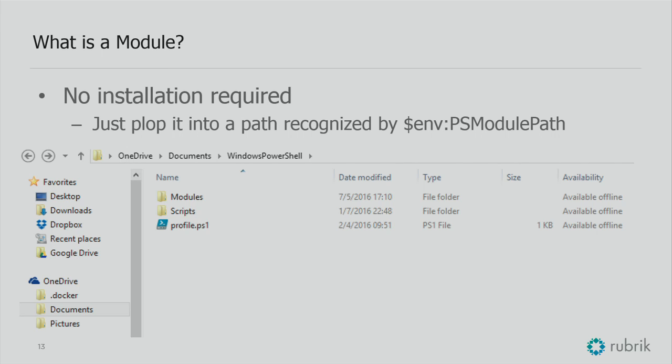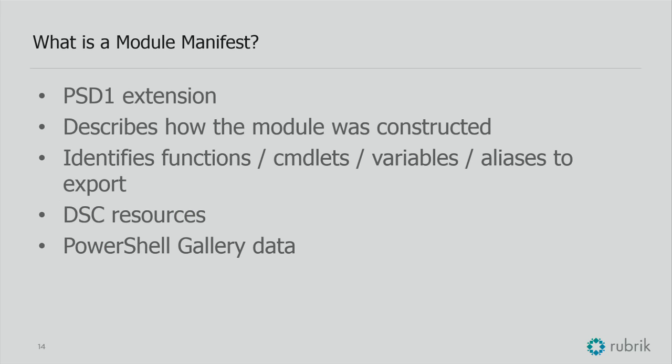I just pulled up my OneDrive, where I store my modules because I'm lazy and I want it to port across all my devices. I have it in Documents, Windows PowerShell, and there's a modules folder in there — just drop the file in, there's no install. There's a PSD1 extension that describes all the functionality that's going to be exported from this module. It tells PowerShell what's inside this thing, describes how the module was constructed, who built it, who you blame if it breaks and blows up your entire environment.